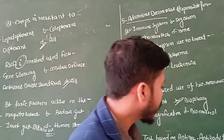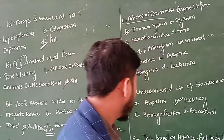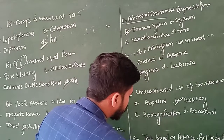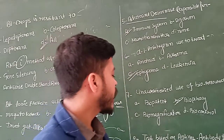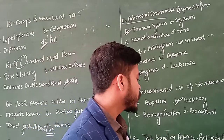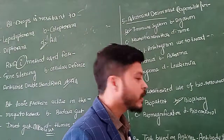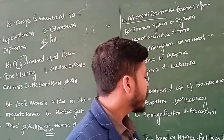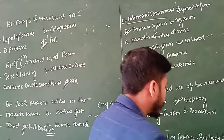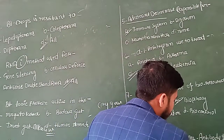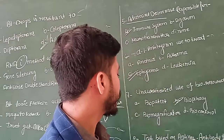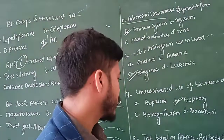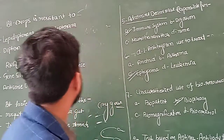Tests based on antigen-antibody interaction include ELISA. PCR stands for polymerase chain reaction and is used for amplification. CT scan, or computed tomography, makes a three-dimensional structure to detect cancer. ELISA, or enzyme-linked immunosorbent assay, is based on antigen-antibody interaction. So the correct answer is ELISA.